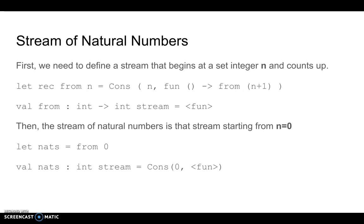Now that we have from defined, nats is just defined as from 0, and you can type this into utop if you would like and see that it works.